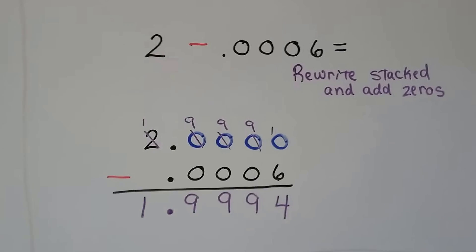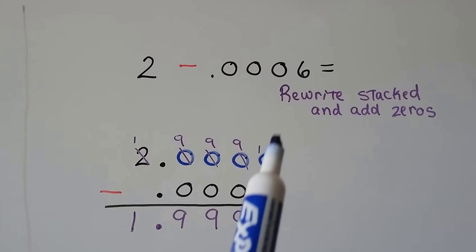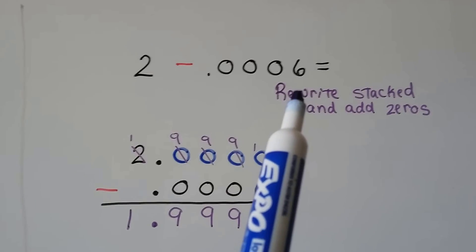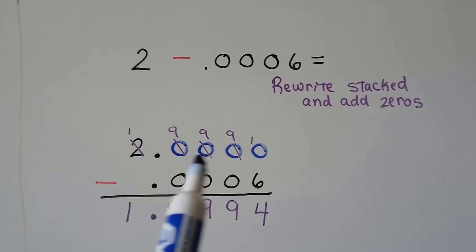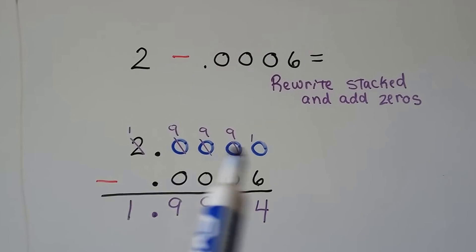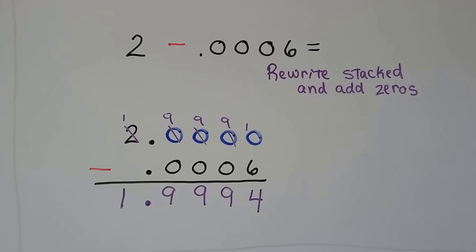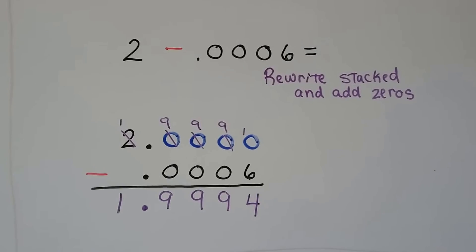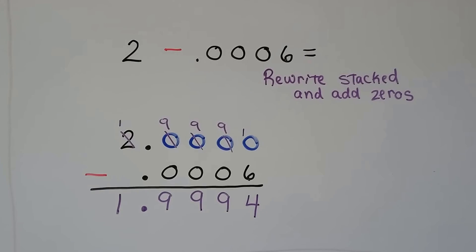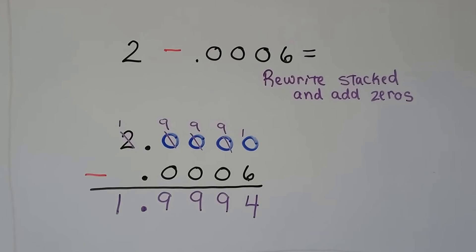Now we just have 2 and we're going to take away 0.0006. So we can add all these zeros to the other side of a decimal point for the 2. Stack it, line the decimal points up, and subtract just like we normally would. Regroup.